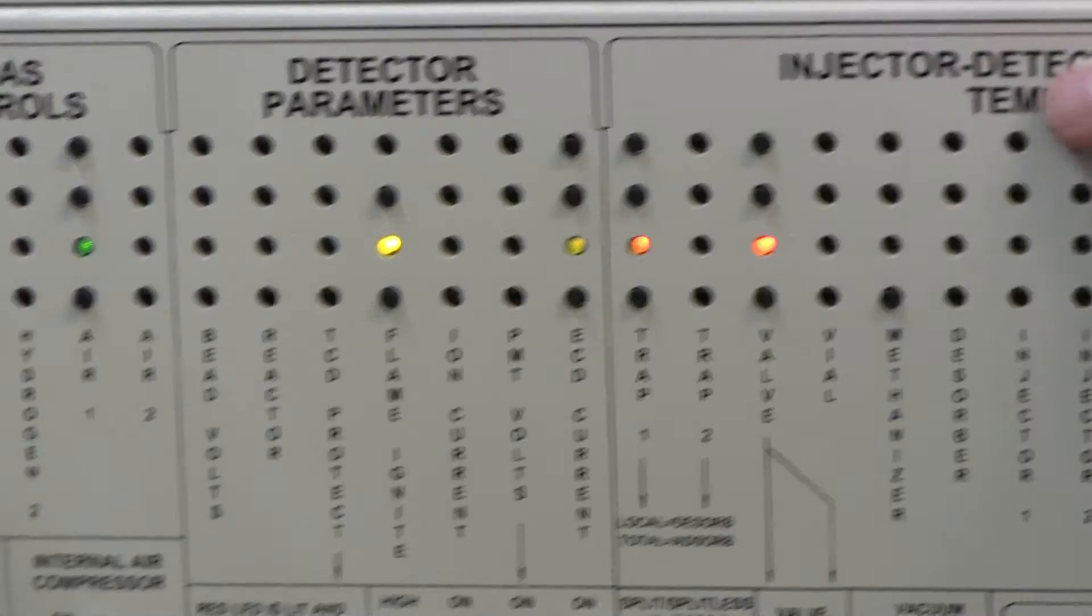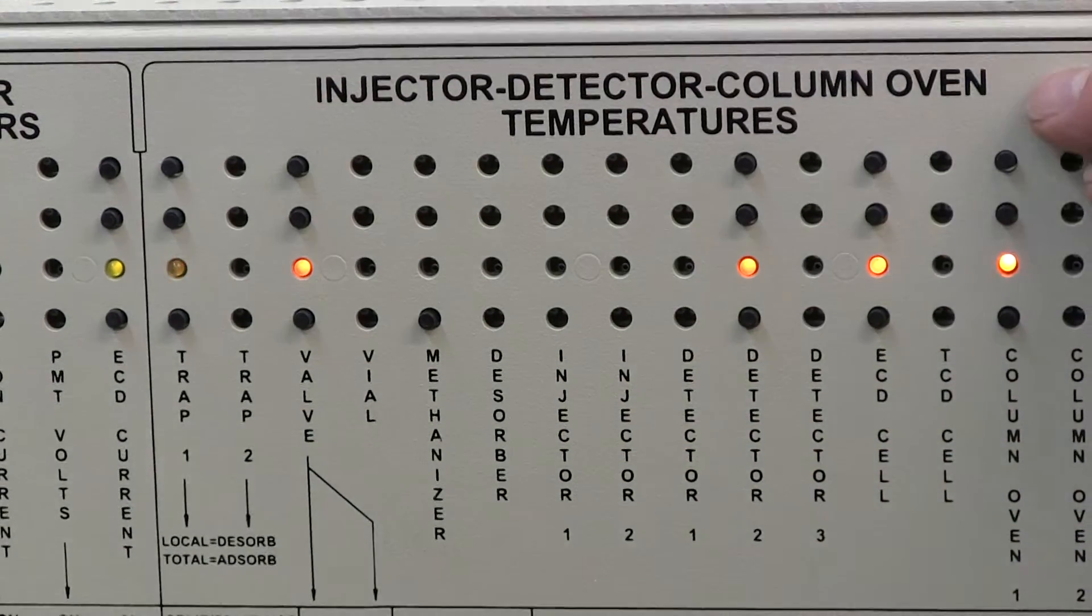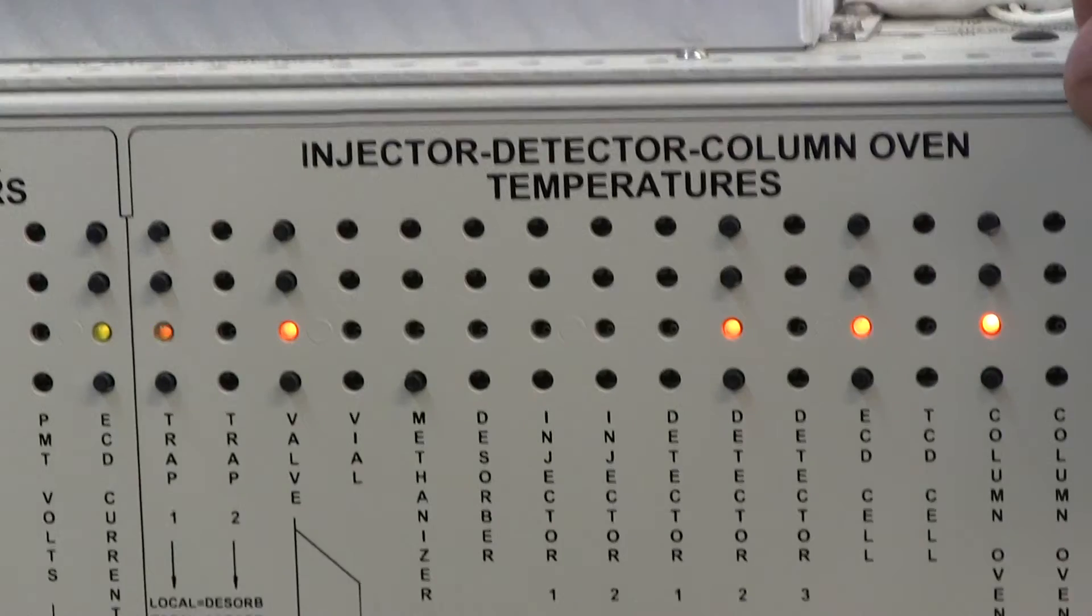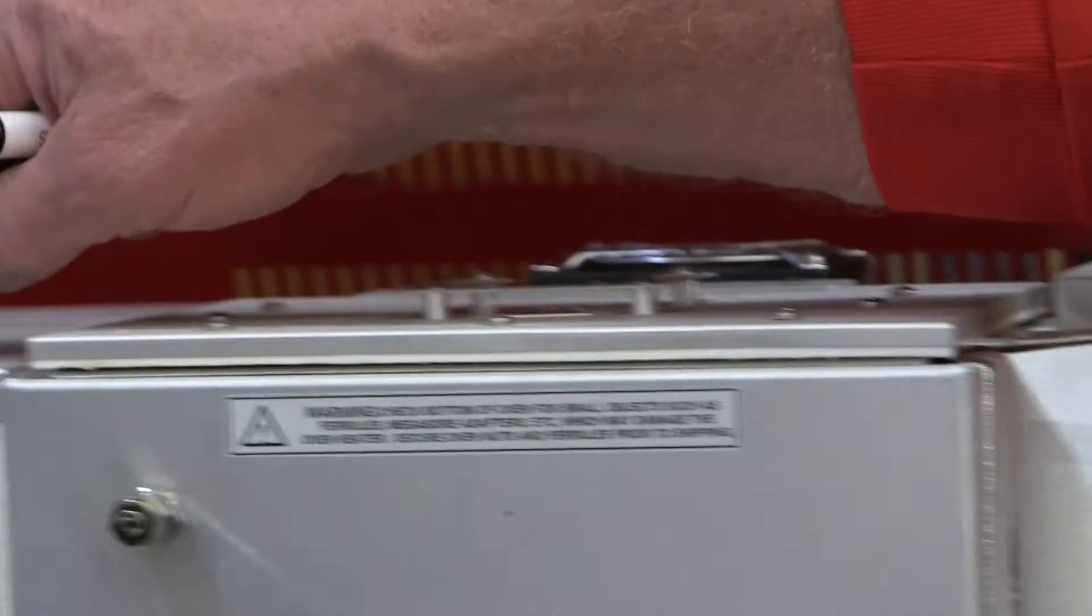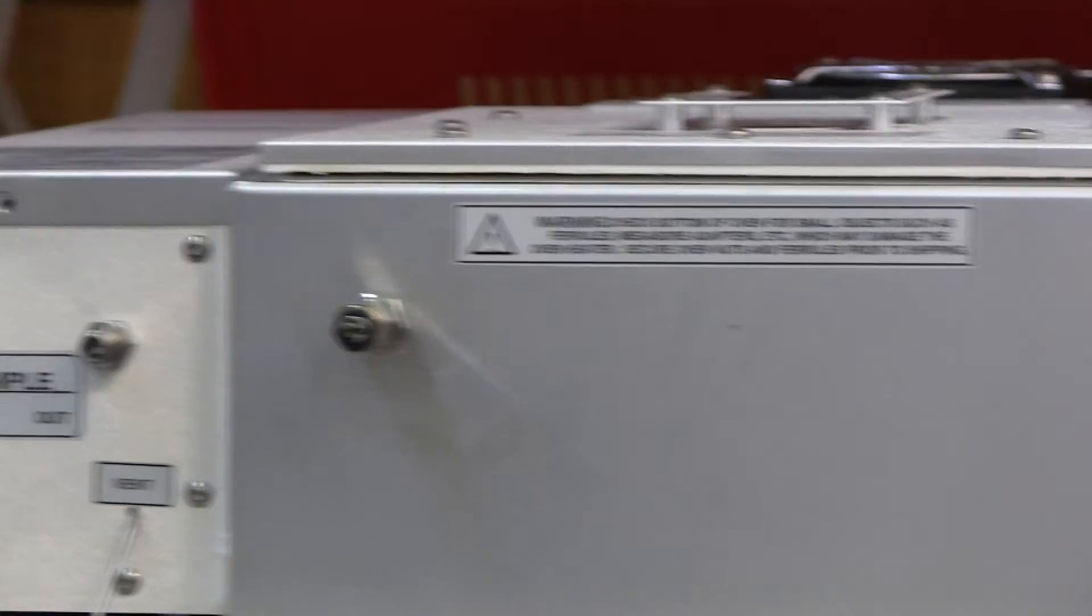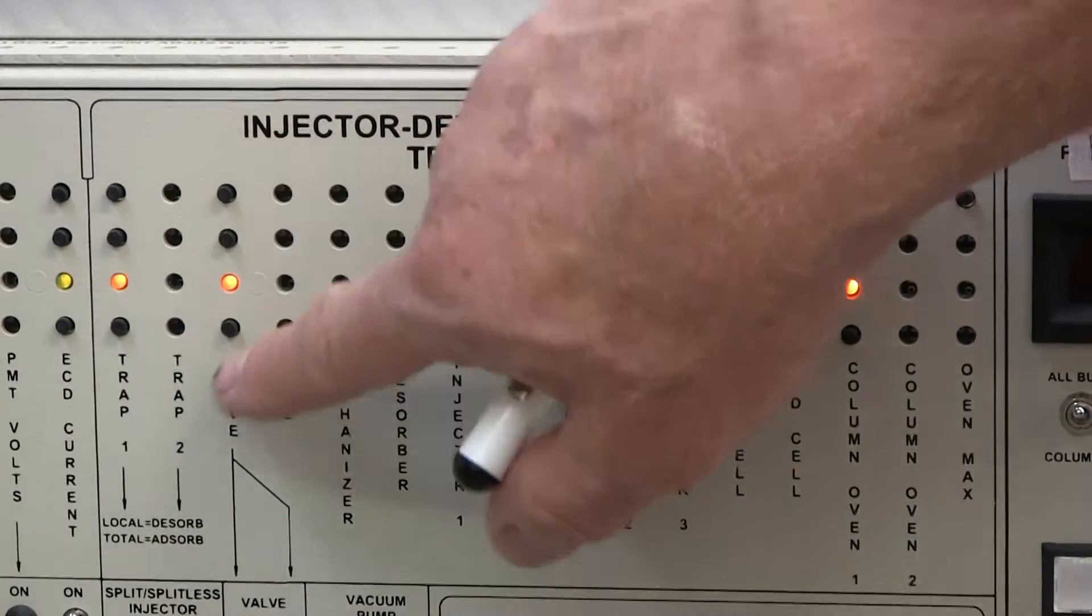Then we have the heaters. We can have up to 16 different heaters on a GC, depending on how the GC is configured. This particular GC has a column oven, an FID, an ECD, a valve, and a pre-concentrator. Each one of those things has some kind of heater control associated with it.